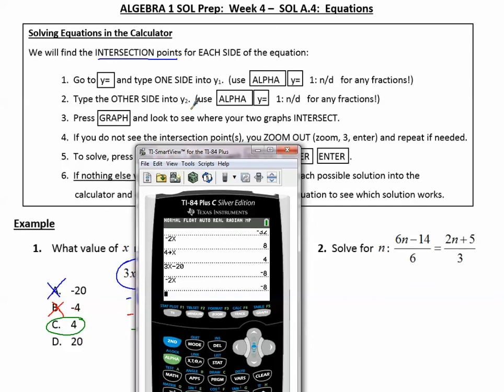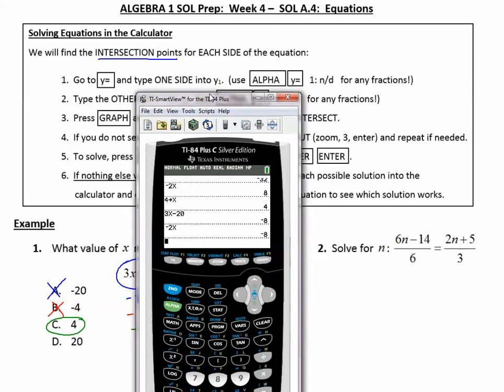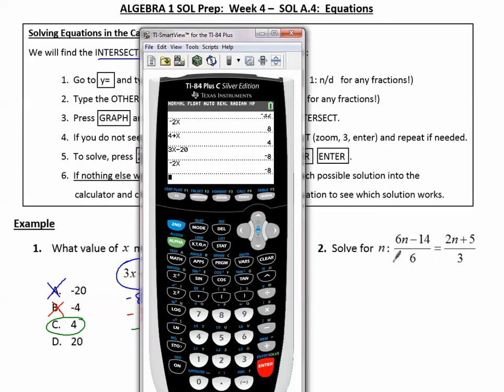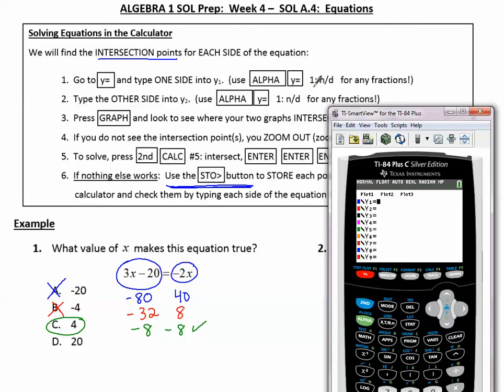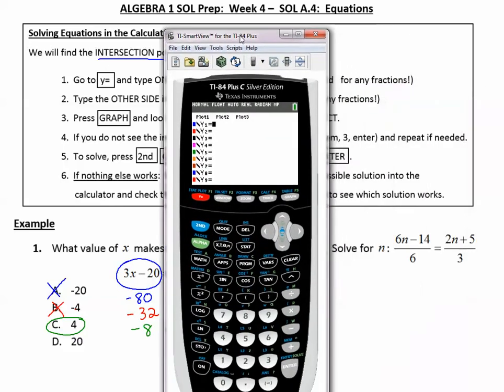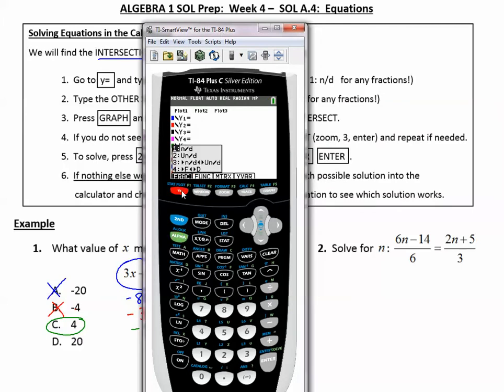Following the steps, we're going to plug in both sides of the equation into the y equals, y1 for one side, the other side y2. This side will go into y sub 1. Let's press y equals in the calculator. Now notice that I have a fraction, and my directions for a fraction is alpha y equals 1, numerator, denominator for any fractions. So alpha y equals, the first choice, enter, and 6n minus 14. Since the x button is easier to press, I'm not going to worry about what variable this says. I'm just going to use the variable button. So 6x minus 14, go down for the denominator, 6.